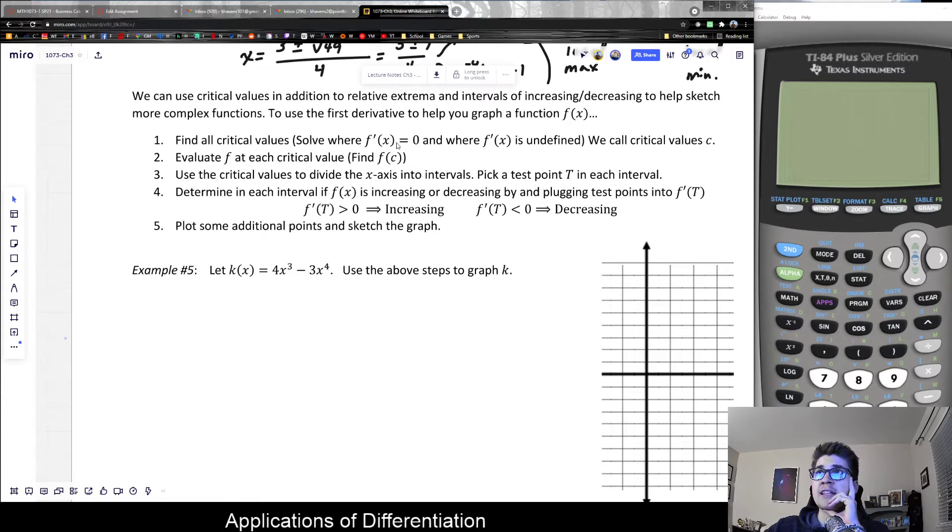Step one: find the critical values by setting the derivative equal to zero or finding if it's undefined. Let's start by figuring out the derivative of our function k. So k'(x), using the power rule, would be 12x² - 12x³. Then we set it equal to zero to find the critical values and factor this.